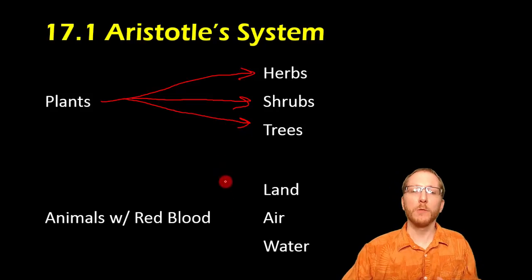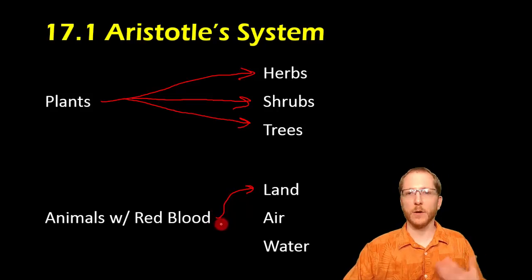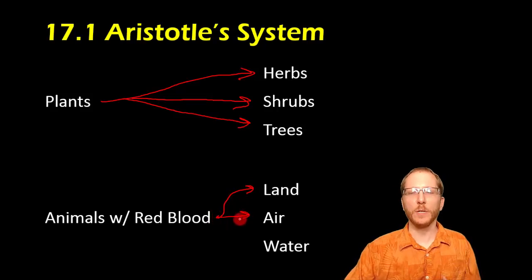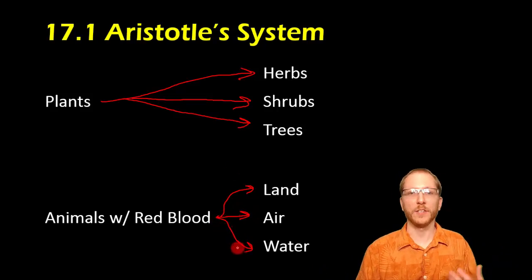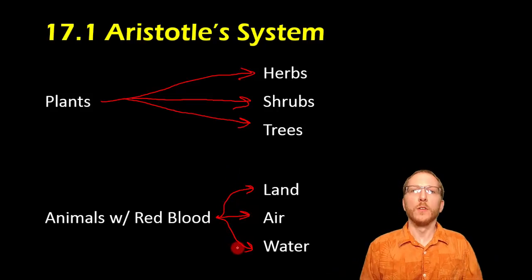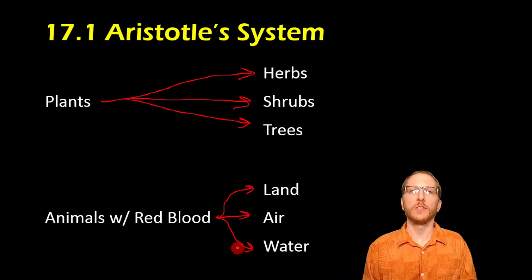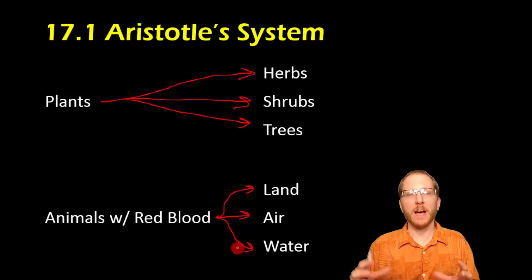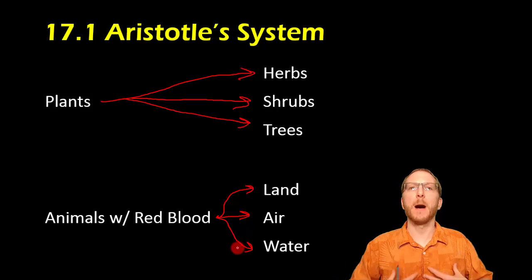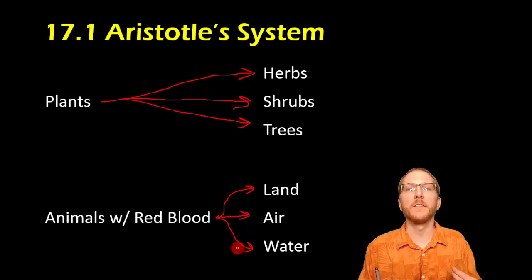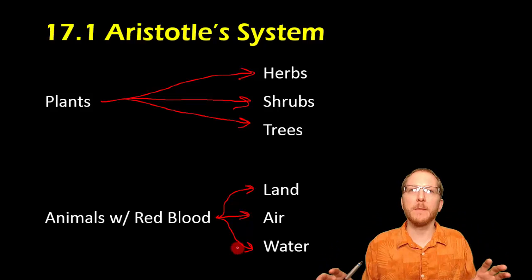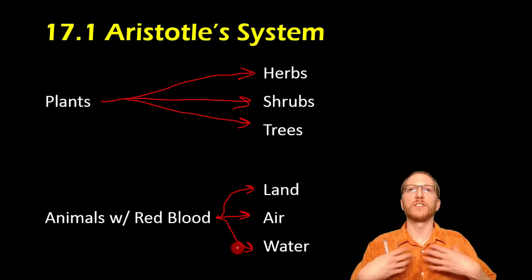Those that had red blood were classified based largely upon where they lived. So you had those that were on land — like snakes, us. You had things in the air, like birds and bats. And then you had fish and whales and all kinds of stuff that probably don't belong together, but they were primarily water organisms. This is still showing us we had this primitive drive to try to group things as related to some degree — maybe not evolutionarily, but at least related in terms of something about the way they live their lives or where they live, so that it's easier for us to categorize, reference, and discuss them.